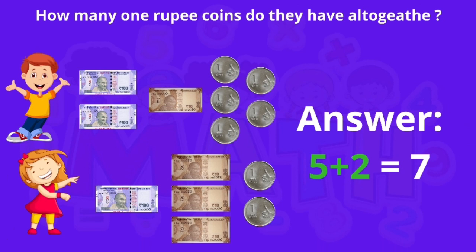The last question: how many 1-rupee coins do they have altogether? Tony has five 1-rupee coins and Sonu has two 1-rupee coins. Five plus two is seven. So there are seven 1-rupee coins in total.